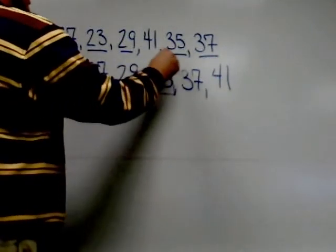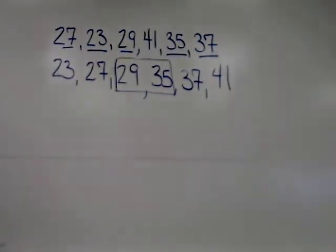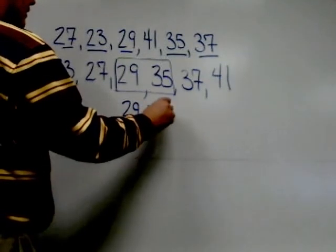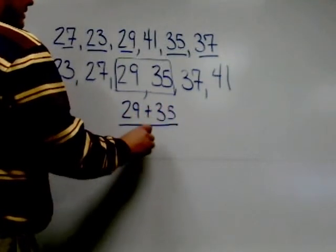With two numbers in the middle, we have to take the average of these two numbers to find the median, meaning I'm going to add these two numbers up, 29 plus 35, and divide by 2.